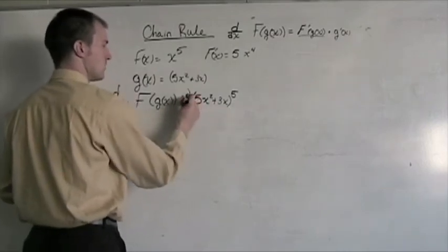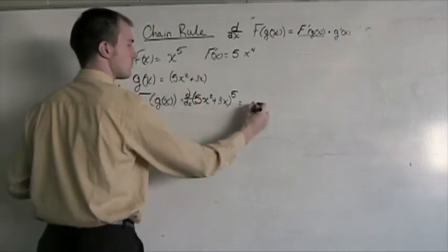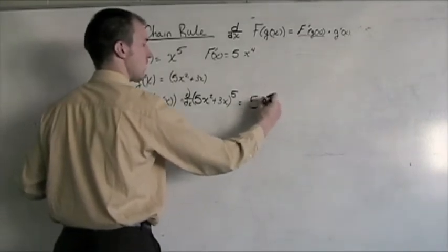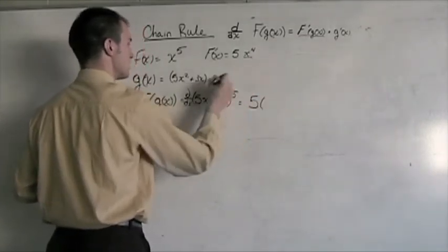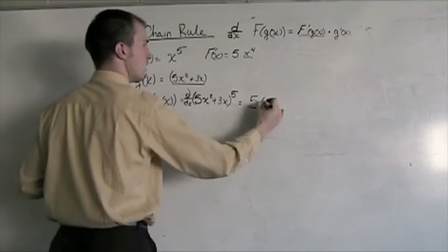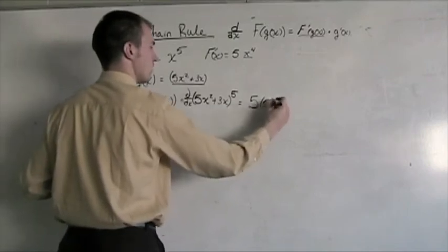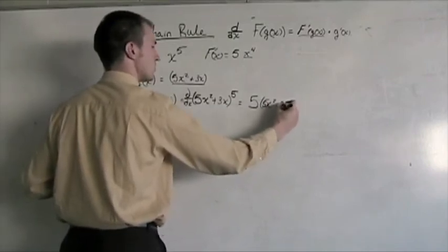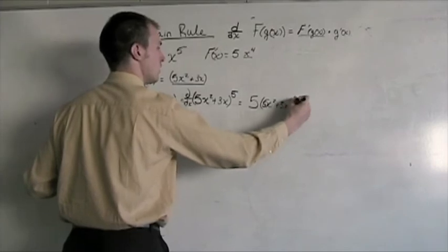So, it's equal to this differentiation, which gives me 5 times, instead of x, again, it's this entire piece here. So, that's 5x squared plus 3x to the fourth power.